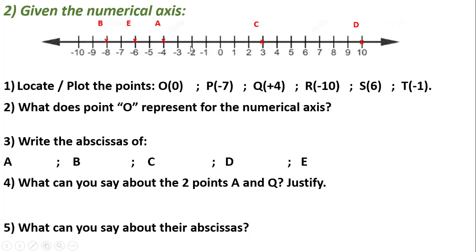The number that represents each point is called the abscissa of the point. We write the abscissa inside parentheses. When locating a point on the axis, I write an X and then the name of the point. Point O has an abscissa of zero, so I locate point O on zero. Point P has abscissa negative 7, which is on the negative side, so here is P located.